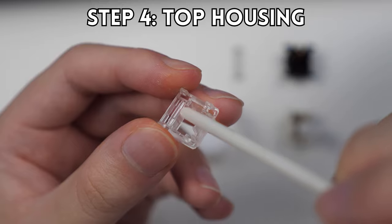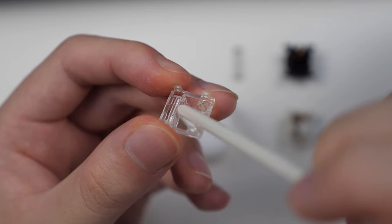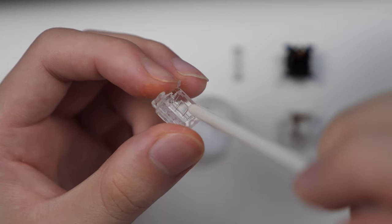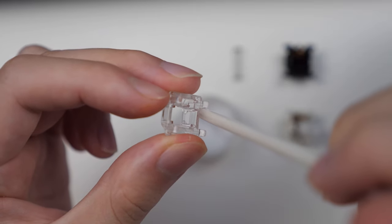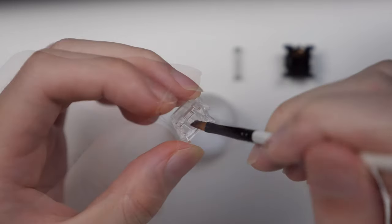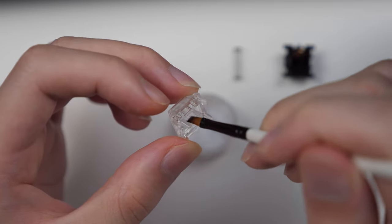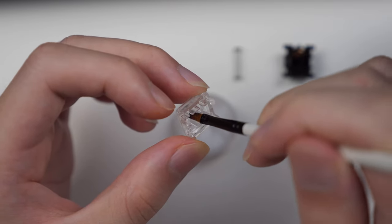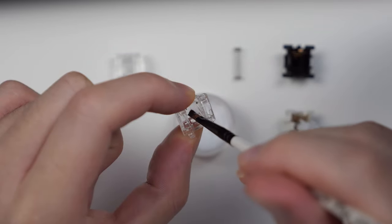Lastly, we have the top housing, and there are four surfaces to lube. Make sure to get each of these surfaces with lube because the stem will be contacting these areas when it goes up and down. Lubing this area is just as important as lubing the bottom housing, so take your time and evenly spread the lube on all four surfaces.